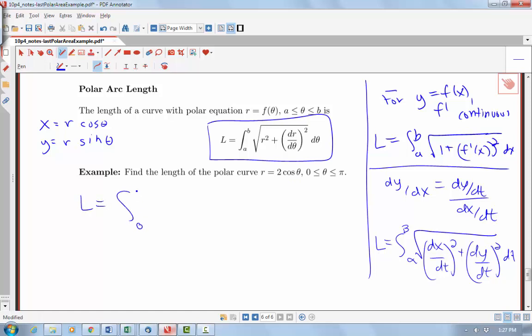So we have an integral from zero to pi. This is going to be the square root of my function, 2 cosine theta squared, plus the derivative of that function. So that would be negative 2 sine theta squared d theta. So what do we have here?